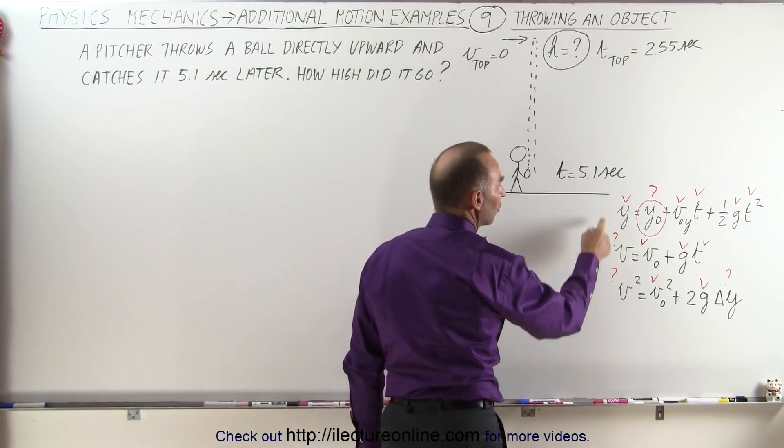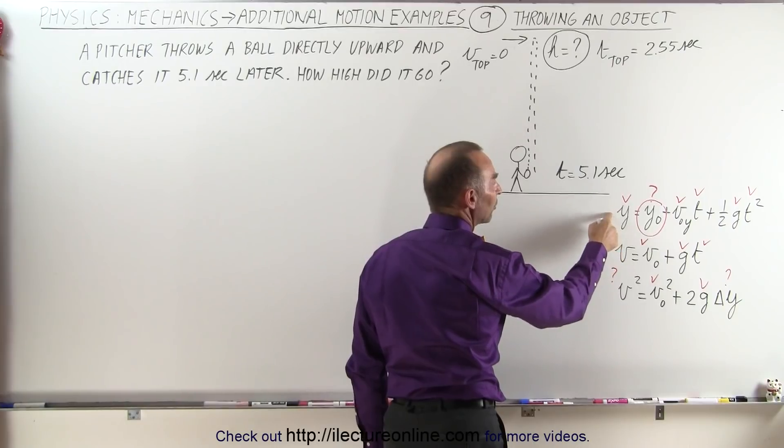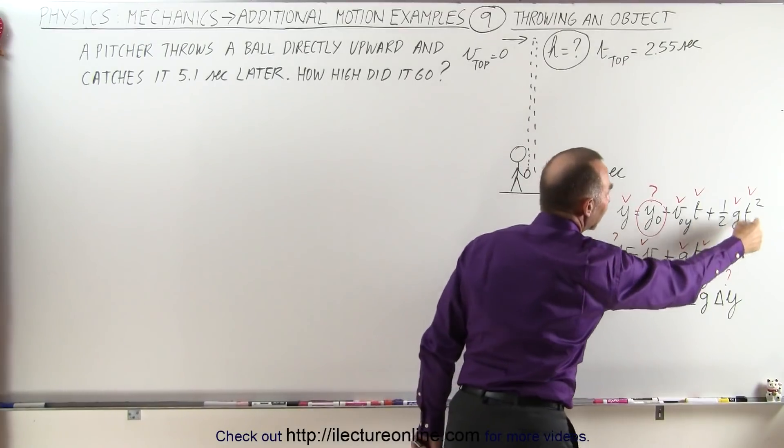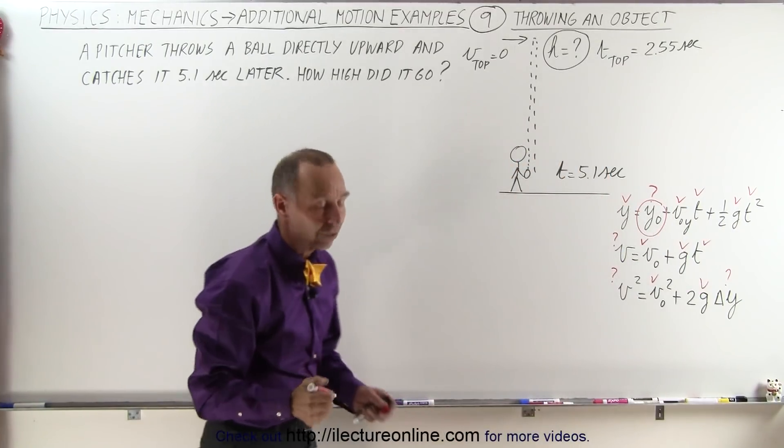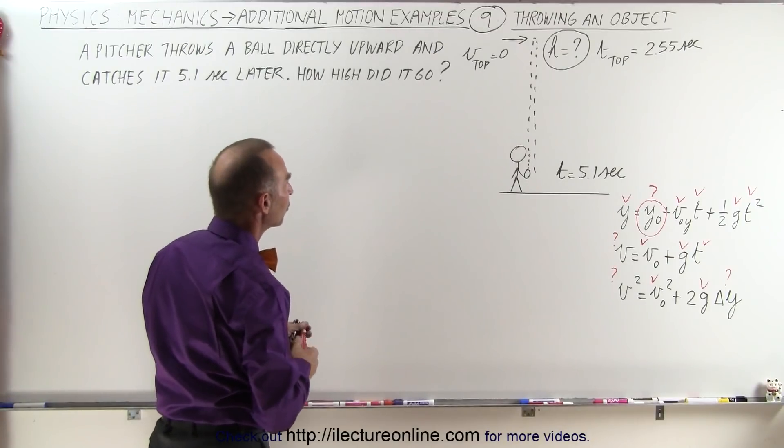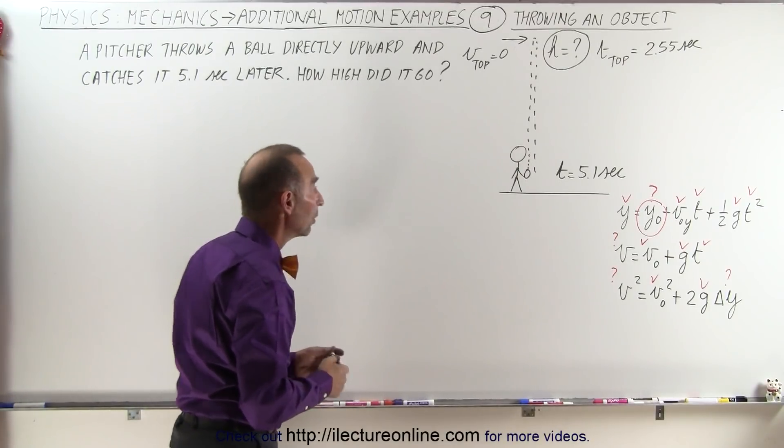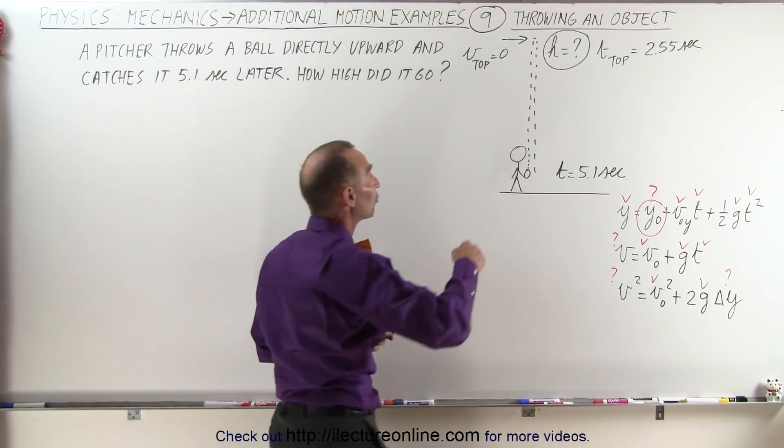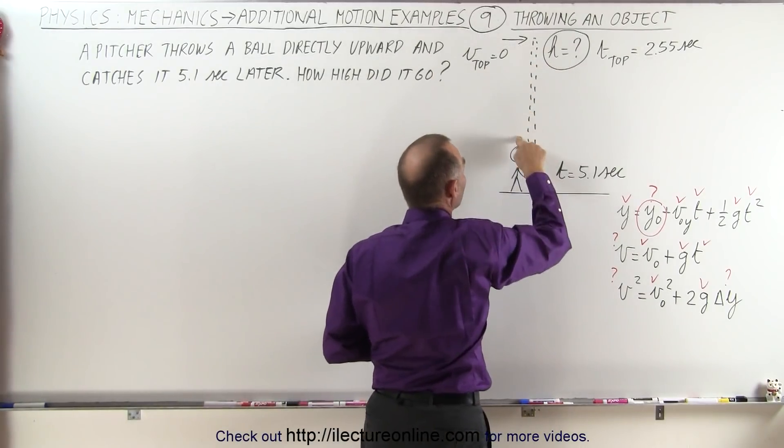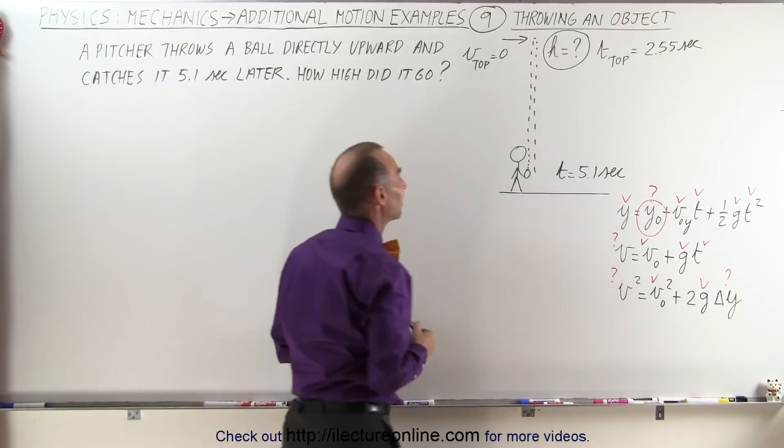So the only two equations we can use is these two, and the best one probably the first one, because that will directly give us the answer we're looking for, and everything else is known. So we're going to use that equation to solve the problem, and again we use the technique where we say it takes just as much time for the ball to fall down as it does for the ball to reach that height.